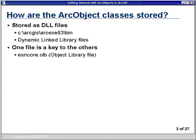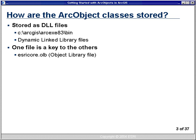Classes are stored in files — DLL files in your bin folder wherever you have ArcGIS installed. These are dynamic linked library files that hold all the C++ code in a binary format. One key file is called the ESRI Core OLB file, an object library file that keeps track of all the classes. You don't usually work with these files directly, however if you do any future programming work, you might reference these and take advantage of the code that's already been written.